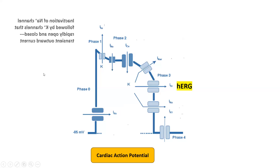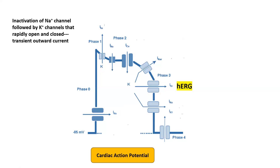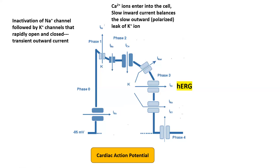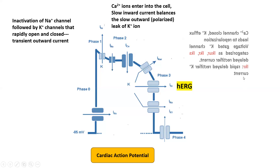In phase 1, there is inactivation of the sodium channel followed by the potassium channel rapidly opening and closing, causing a transient outward current. In phase 2, the calcium channel opens, calcium ions enter the cell resulting in a slow inward current that balances the slow outward depolarizing leak of potassium ions.